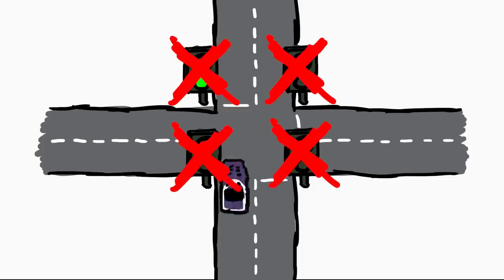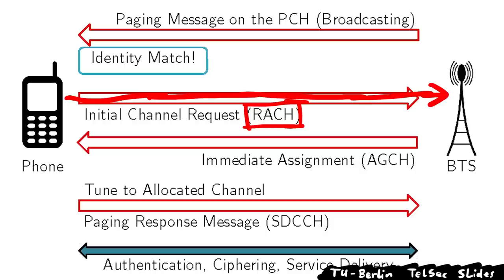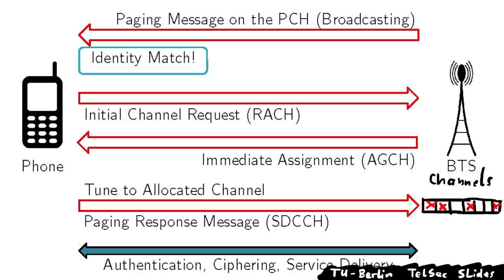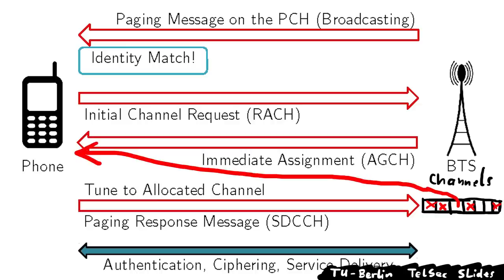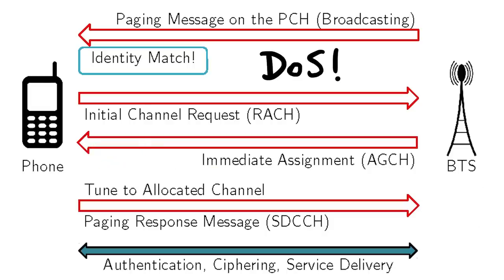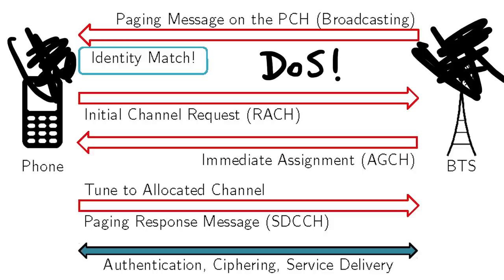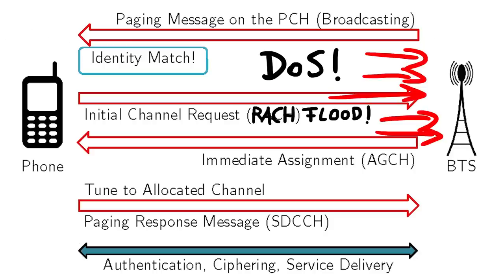With RACH messages there is also the first security issue with GSM — a denial of service attack. You can flood the base station with RACH messages: you request a channel, the base station allocates a time slot, and since there are a limited number of time slots, other phones won't be able to get a connection. Of course the base station frees up channels when they're not used, but if you keep requesting new ones, other phones will probably not be able to connect.